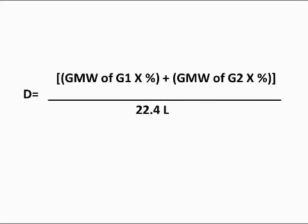Now, the equation I'm using is a variation of the formula for gas density. So what we'll use is the gram molecular weight of the first gas times its percentage, plus the gram molecular weight of gas 2 times its percentage, and I divide it by the standard 22.4 liters.